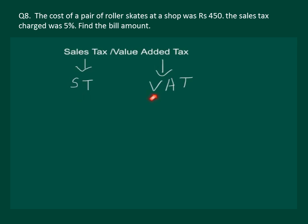Now let's understand VAT. VAT is very much similar to sales tax, but with the difference that VAT is normally imposed on the customer by the state government and it varies from state to state. It is also added to the selling price of the item, and sometimes the marked price already includes the VAT.